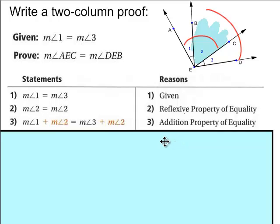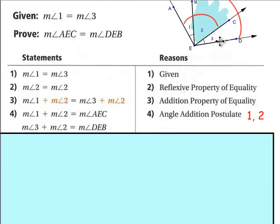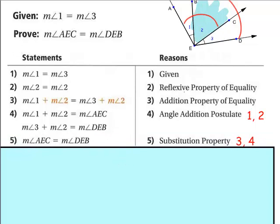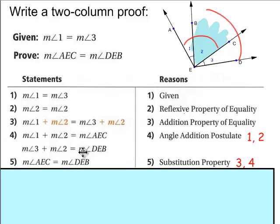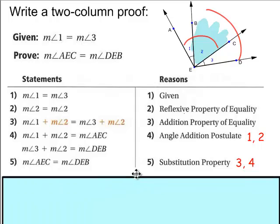Now you're taking the information in line one and you're adding the measure of angle two to each side. So it's the addition property of equality. Then now you're saying that this angle one and angle two together form the measure of angle AEC, and the measure of angle three plus the measure of angle two is DEB, the measure of it. And now we can say that you're substituting AEC in place of this part here and measure of angle DEB in place of this. That's substitution.